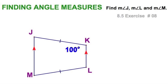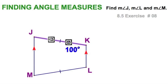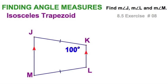Here we're given a figure and one angle measurement. Let's find the other three. We've got some marks here — a pair of parallel sides. That means it's a trapezoid, but the other sides aren't parallel; they are instead congruent. So that would be an isosceles trapezoid.